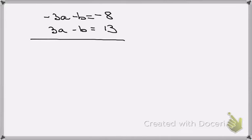I can just combine the two equations because I have the plus and minus right there. That's going to give me 0a minus 2b is equal to minus 8 plus 13 is 5.